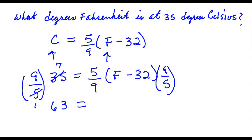And on the right-hand side of the equation, the 9 cancels with this 9, and the 5s divide out also. So I'm just left with Fahrenheit minus 32.